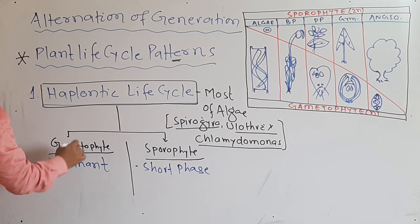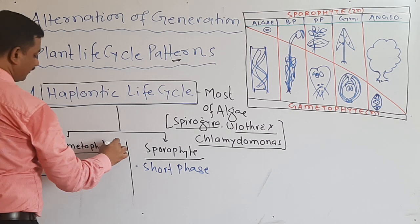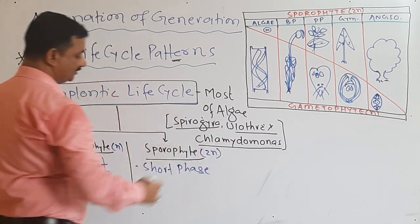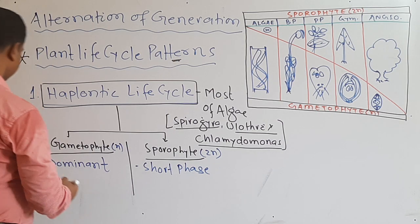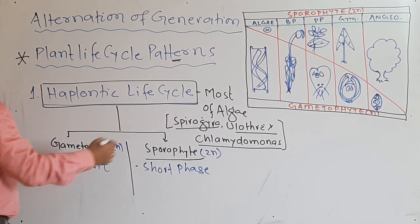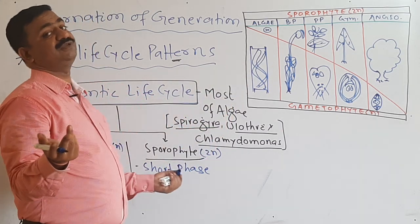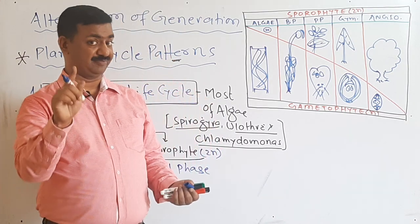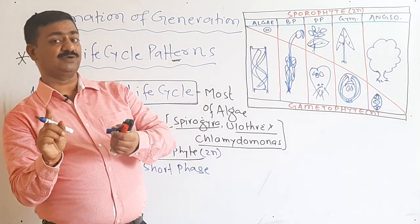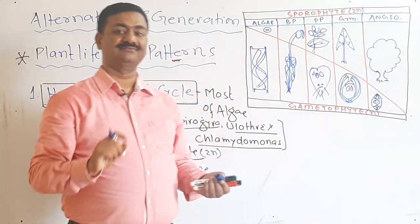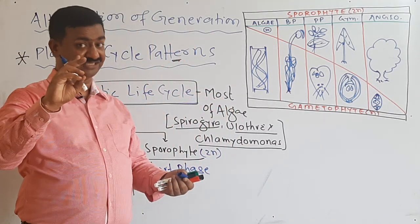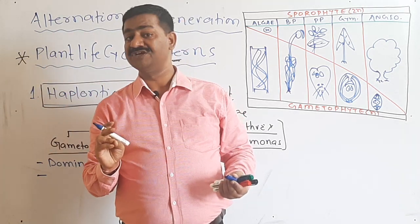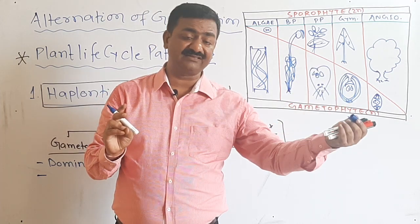Since it is gametophyte, it is haploid. It is diploid — we studied earlier. Now since it is dominant, algae are usually chlorophyllous in structure. Since it is chlorophyllous, it will be green, and since it is green, it will perform photosynthesis — so it is green and photosynthetic.